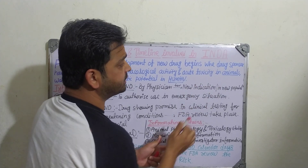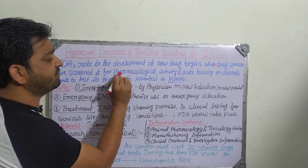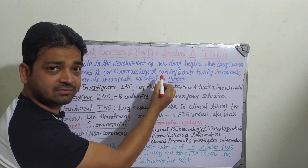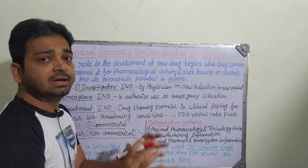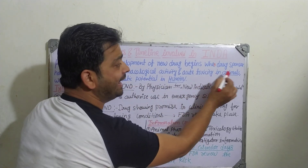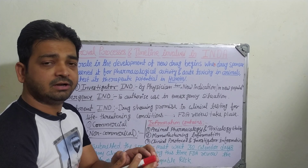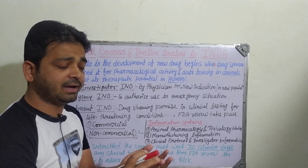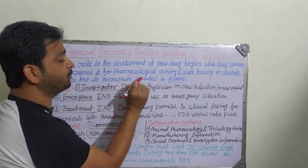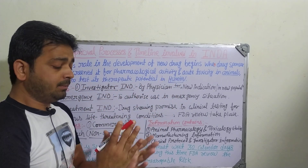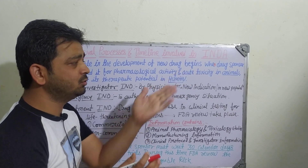When the drug sponsor has screened a new drug for its pharmacological activity — what it was discovered for, its therapeutic activity, and acute toxicity, whether it is giving any toxic effect — then only we can proceed further into an animal model. Animals like rat, mice, guinea pig, and rabbits, which have anatomical and physiological resemblance to the human body, are used to test the drug's therapeutic potential before moving to human volunteers.